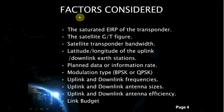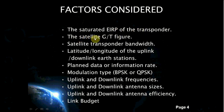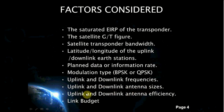There are many factors that need to be considered for obtaining a satellite link budget. These include: the saturated EIRP of the transponder, the satellite G/T figure, satellite transponder bandwidth, latitude and longitude of the uplink and downlink earth station, planned data or information rate, modulation type such as BPSK or QPSK, uplink and downlink frequencies, uplink and downlink antenna sizes, and uplink and downlink antenna efficiency.